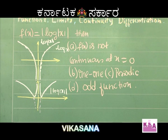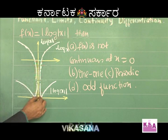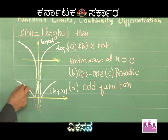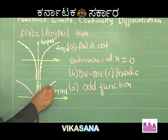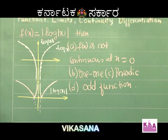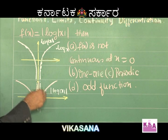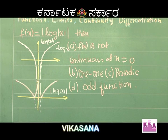Looking at this graph, let us start answering the question. Option a: f(x) is not continuous at x = 0 — this is very much true. You can see at that point the function is not continuous. The reason is simple: the graph has a break exactly when x = 0, because log 0 tends to minus infinity, and so |log 0| tends to plus infinity. The y-axis is called an asymptote to the graph — a line which meets the curve at infinity.